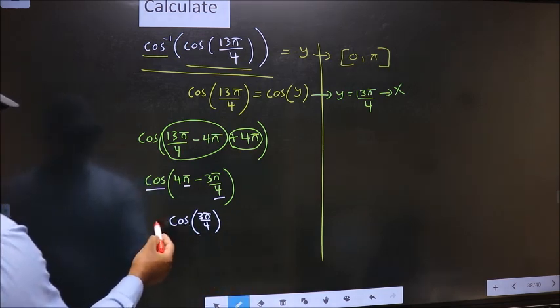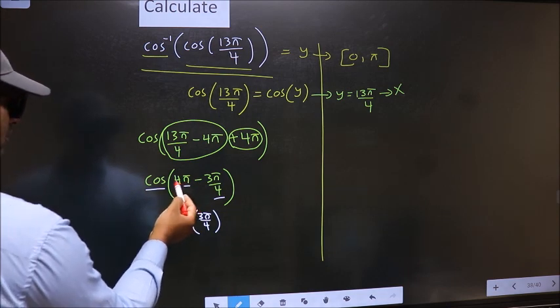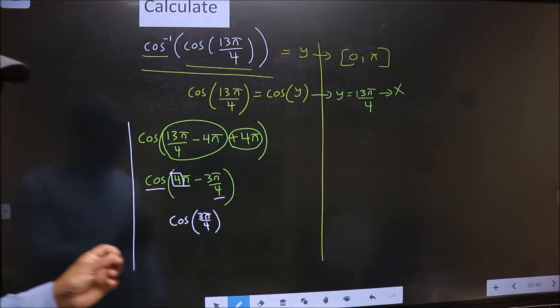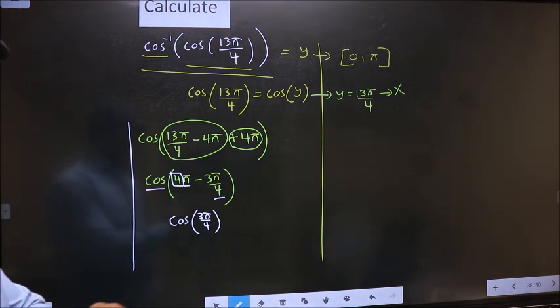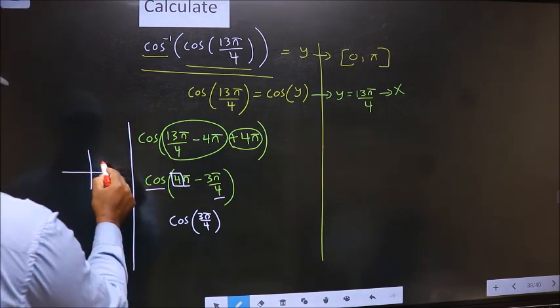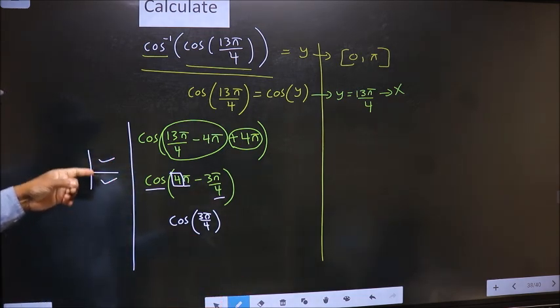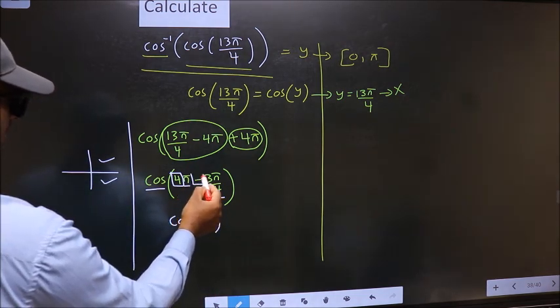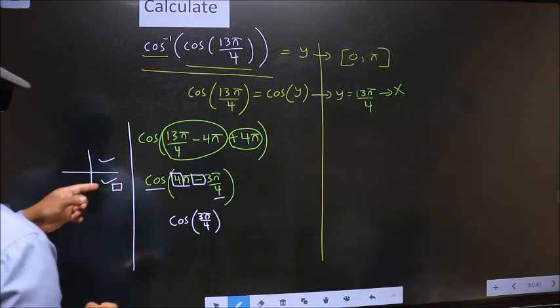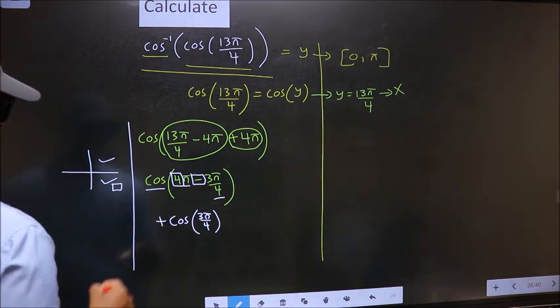Now the question is will we get here plus or minus. To answer that we should look at the number before π which is 4. And 4 is even. And all the even multiples of π, they lie either in the 1st or in the 4th quadrant. So now to select the quadrant we should look at this symbol. Here we have negative, that means angle lies in the 4th quadrant. And in the 4th quadrant cos is positive. So put plus.